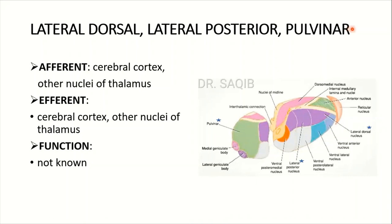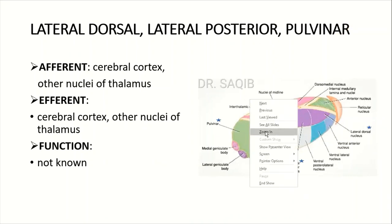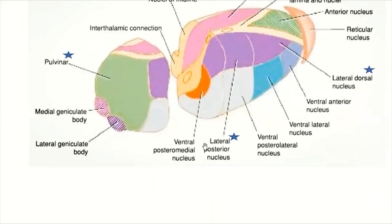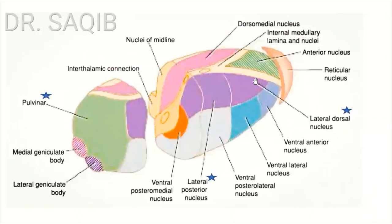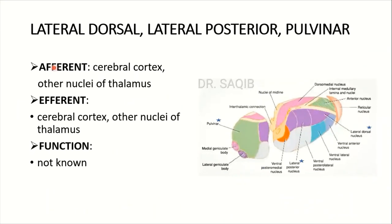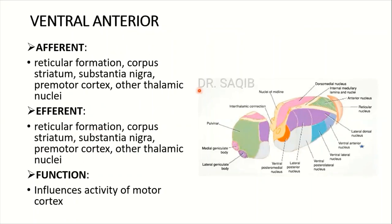The lateral dorsal, lateral posterior, and pulvinar nuclei — the pulvinar being the largest nucleus of the thalamus — share similar connections. Their afferents are from the cerebral cortex and other thalamic nuclei, and efferents go to the cerebral cortex and other thalamic nuclei. The function of these three nuclei is not known.